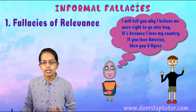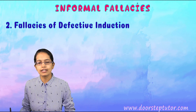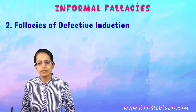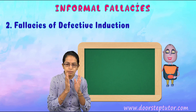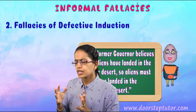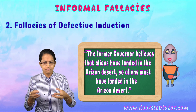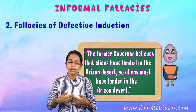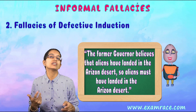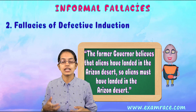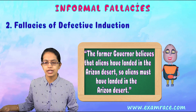The next is fallacies of defective induction. It means that the premise is relevant to the conclusion, but is very, very weak — so weak that if I am trying to rely on it, it's a real blunder, because the premises are too weak to prove the conclusion by itself. So that is defective induction.